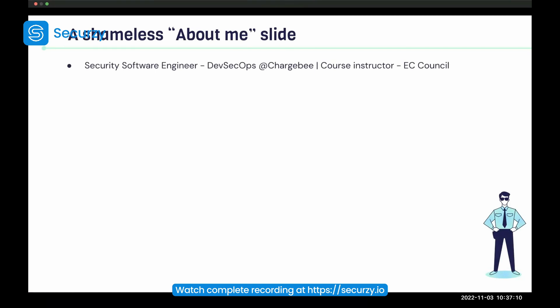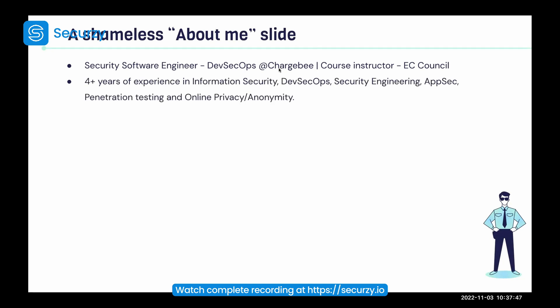I'm a security software engineer in DevSecOps at Chargebee, as a full-time role. I've also been a course instructor for EC-Council for Ruby on Rails security, specific to the Ruby on Rails framework. I also do freelancing in terms of public speaking — I give talks to universities and organizations, and conduct security awareness training. I also conduct webinars and bootcamps. I have four-plus years of experience in information security, broadly, including DevSecOps, security engineering, application security, penetration testing, and online privacy and anonymity.